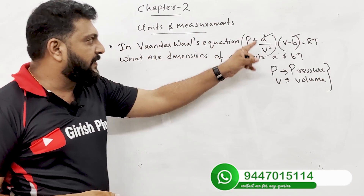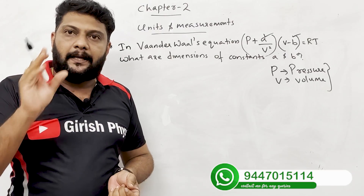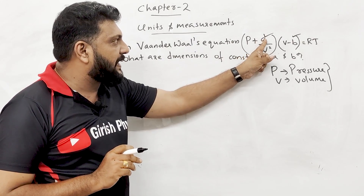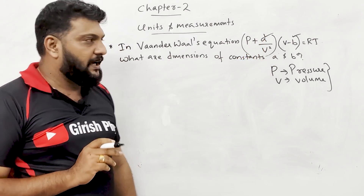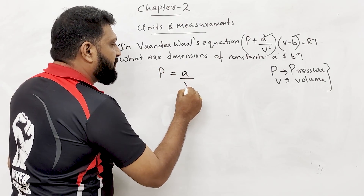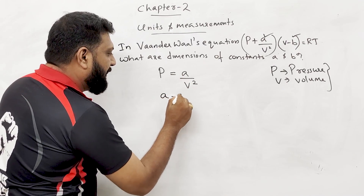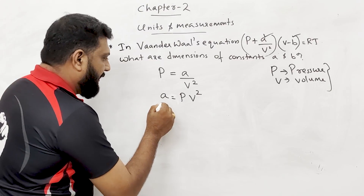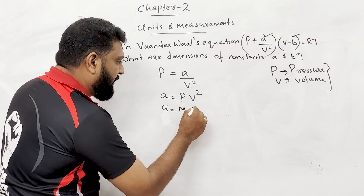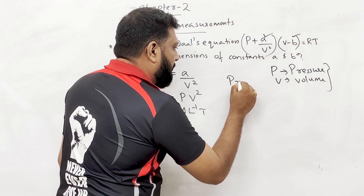Applying the principle of homogeneous dimensions: A/V² must have the same dimension as P (pressure). Therefore, A = P × V². The dimension of pressure is M·L⁻¹·T⁻².